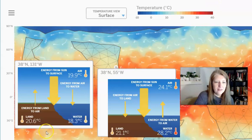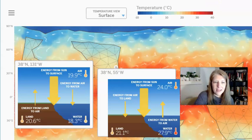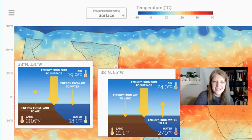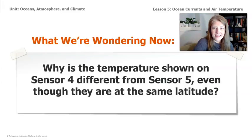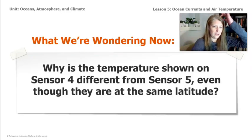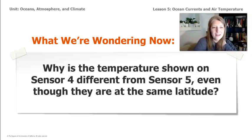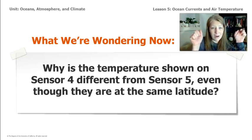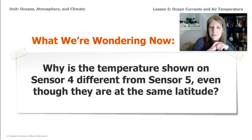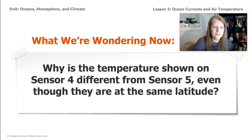Let's pause and welcome back everyone who did the activity on their own. Let's discuss what we learned as we explored the SIM together. What we want to know is: why is the temperature shown at sensor 4 different from sensor 5? What we saw is that sensor 4 is near a cold current and sensor 5 is near a warm current — so how is that going to affect what happens at both places?